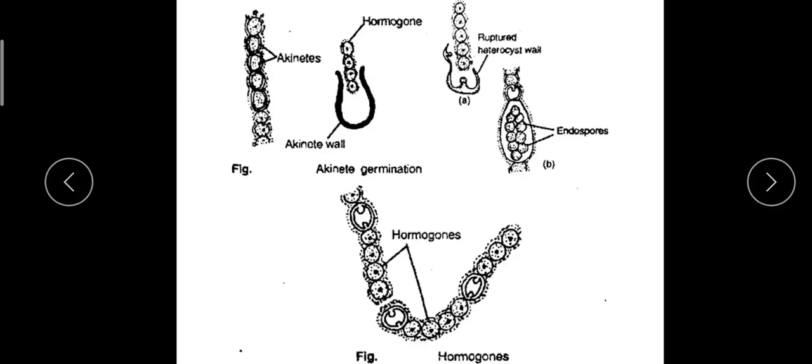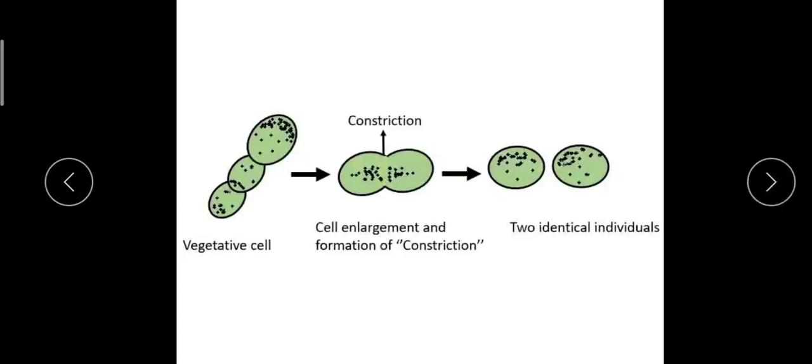That is all about akinetes. Akinetes are small vegetative cells, but they are larger in size than the vegetative cells. They have thick and resistant walls, plenty of reserve food materials, and they germinate to form new filaments.